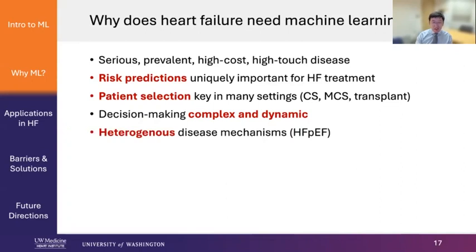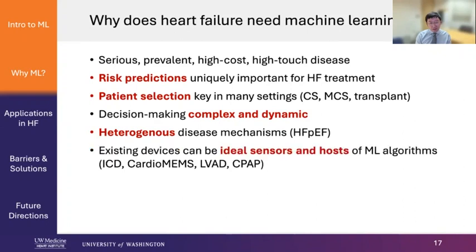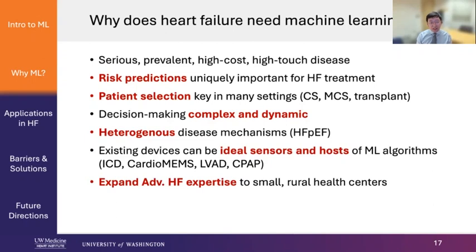Some diseases in heart failure, such as HFpEF, we think have very heterogeneous mechanisms, and machine learning can really help us uncover those underlying mechanisms and potentially find new treatments. Heart failure is also unique in that we have a lot of devices already in patients — ICDs, CardioMEMS, LVADs — and those machines all have power and computer chips, making them ideal sensors and hosts for machine learning algorithms. Also, advanced heart failure expertise is generally concentrated at academic centers. With machine learning, we can train algorithms at big academic centers and export them to smaller rural areas, expanding advanced heart failure expertise.